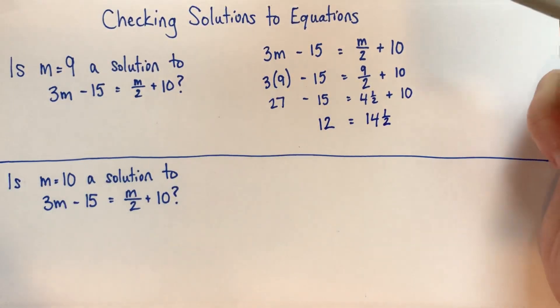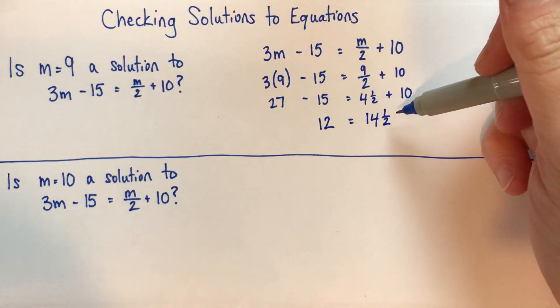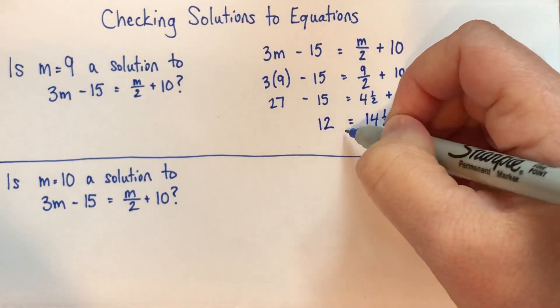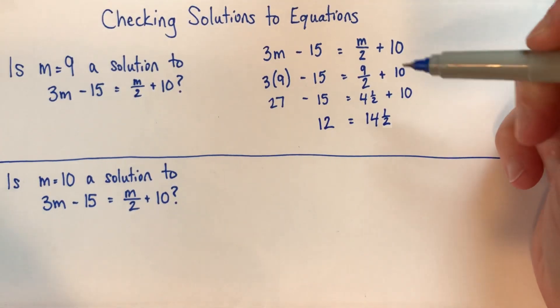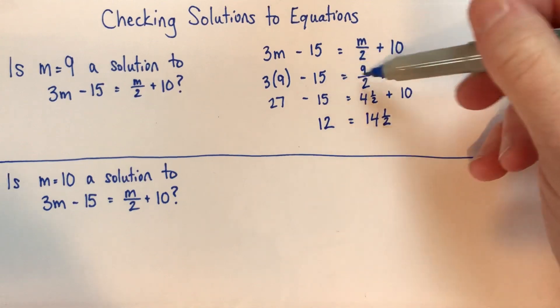So here's why I don't like this way of writing it, because 12 is not equal to 14 and a half. So this is a lie. Sometimes people solve it by just putting a little bar through it, which is reasonable, except that this is also a lie.